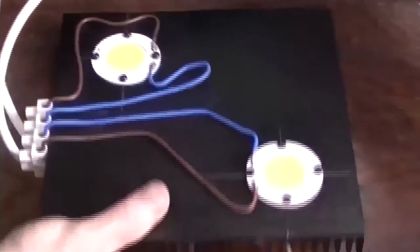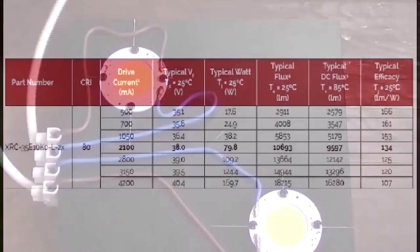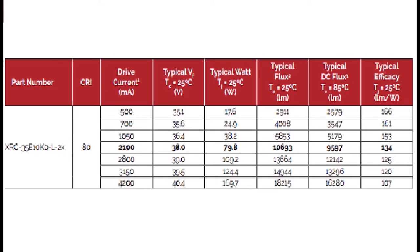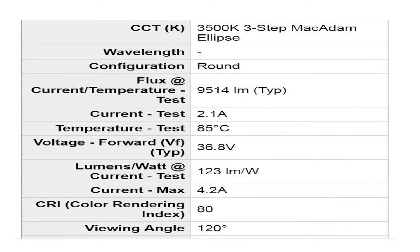And here's our typical settings, so 80 CRI, 2100 milliamps, 36.8 volts, it's not particularly efficient there, 123 lumens per watt, but do look at that maximum current, 4.2 amps. So that would double that 9500 lumens.